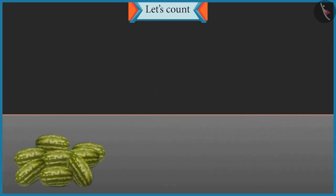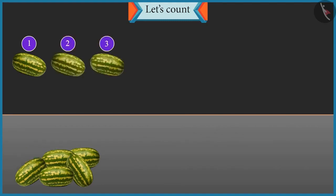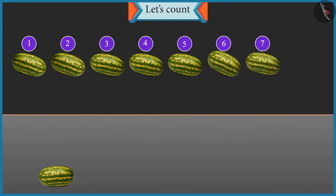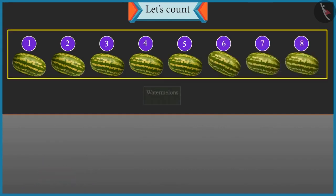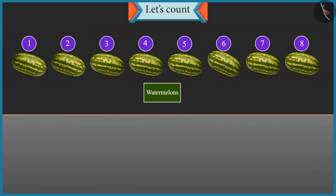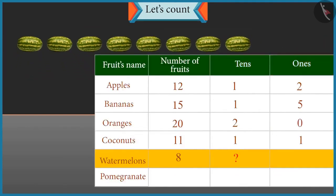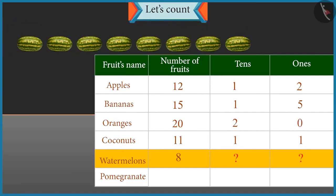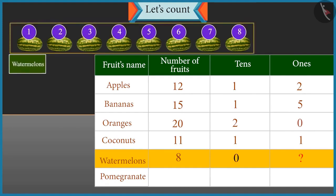Now count these watermelons and tell their count. One, two, three, four, five, six, seven and eight. There are eight watermelons. So how many tens and ones are there in eight? There are only eight watermelons, so we cannot form any group of ten. So there is zero tens and eight ones.